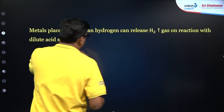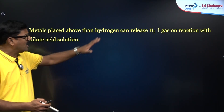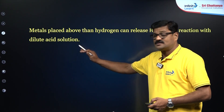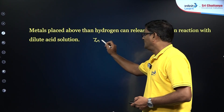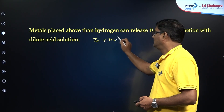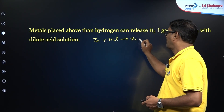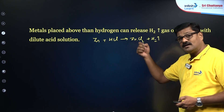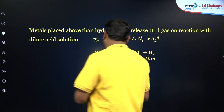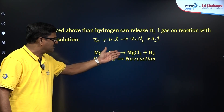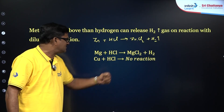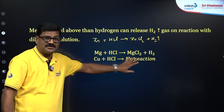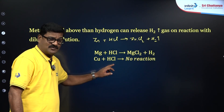Metals placed above hydrogen in the electrochemical series can liberate hydrogen gas on reaction with dilute acid solutions. For example, zinc reacts with HCl to give zinc chloride and hydrogen gas. Magnesium can react with HCl to give magnesium chloride and hydrogen gas. Whereas copper reacts with dilute HCl — there is no reaction.